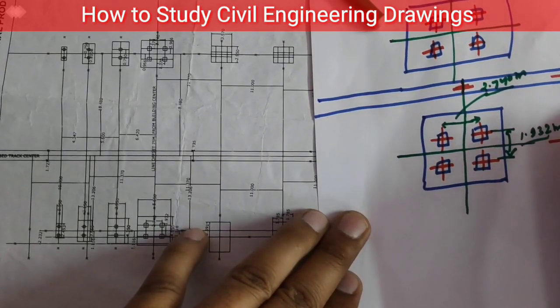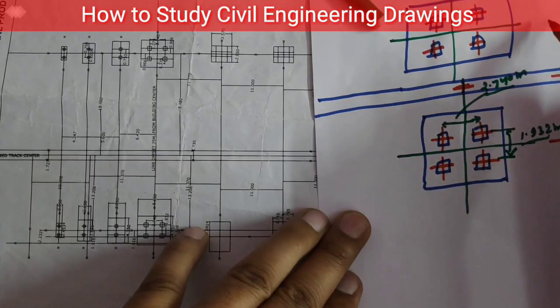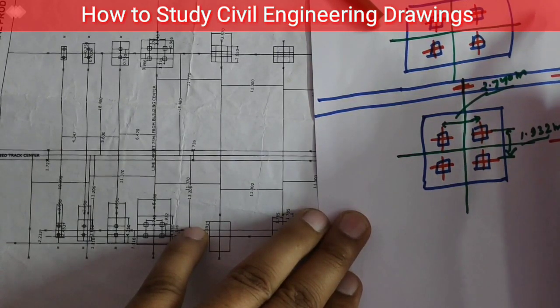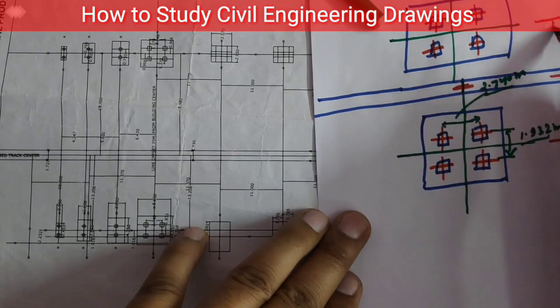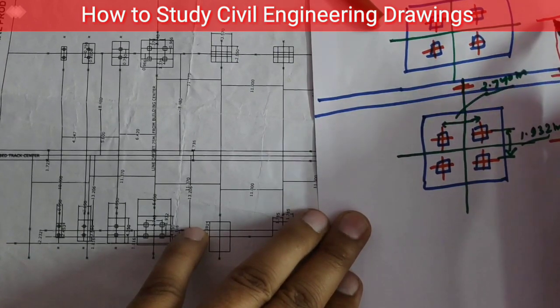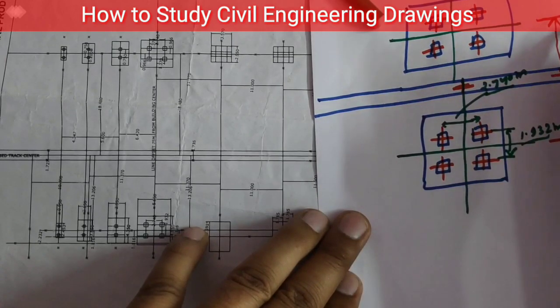So from this center to rail center, what is the distance? The distance is 13.206 meters. And from this center to this particular center, the distance is 18.480 meters, so you can calculate the total distance.